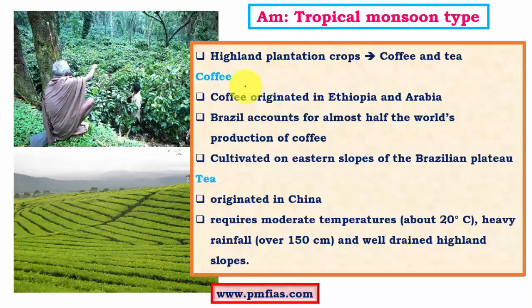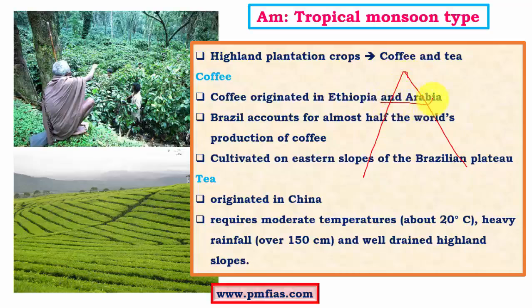Coffee and tea need more or less the same environmental and topographical conditions, but with certain differences. Coffee needs rains almost throughout the year whereas tea is fine with seasonal distribution of rainfall. Both cannot tolerate stagnant water and can only grow on slopes. Coffee cannot grow in aluminium-rich soils, which are mostly present in the upper levels of hills. Tea plantations, however, are abundant at upper elevations of hills, essentially from 800 to 2,000 meters.